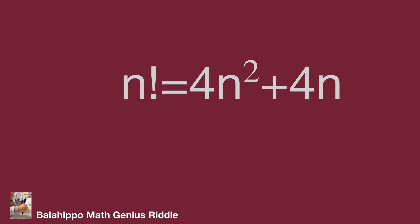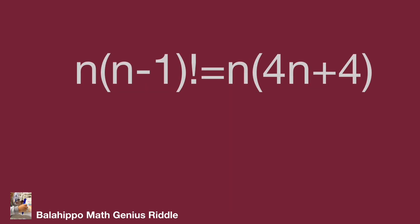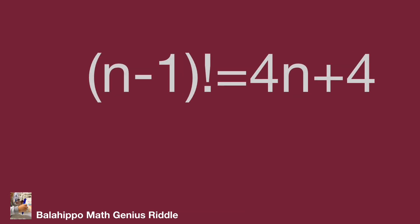There is an n factor on both sides. So rewrite n factorial as n times (n minus 1) factorial on the left side, and factorize the right side as n times (4n plus 4). Since n is not equal to 0, we can eliminate n from both sides, giving us: (n minus 1) factorial equals 4n plus 4.